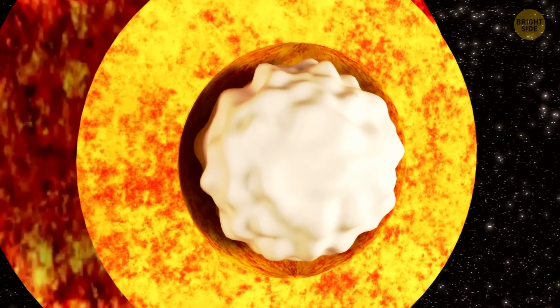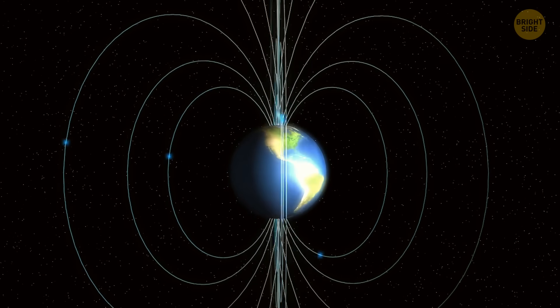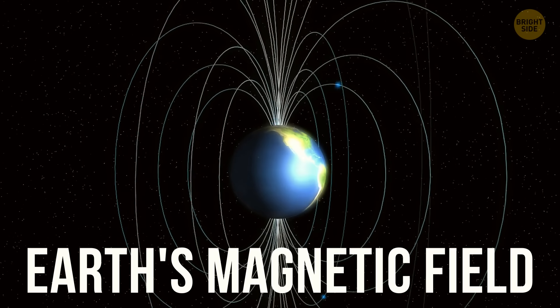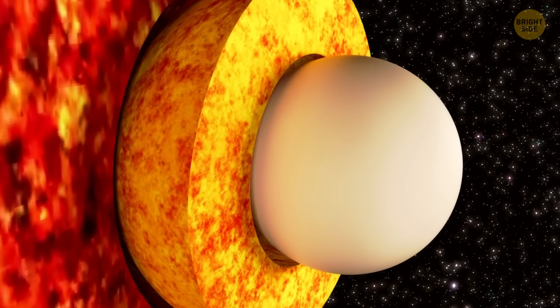This outer core, composed of liquid iron and nickel, has a highly important role. It helps generate Earth's magnetic field. Before, we really didn't understand its impact on the inner core.